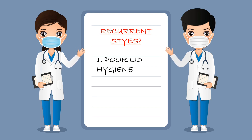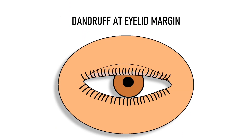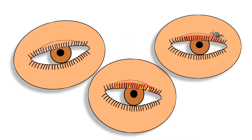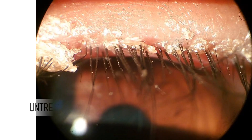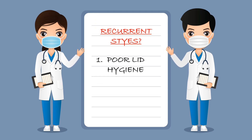The first reason is poor lid hygiene. Some people have chronic infection of the eyelid margin, some have dandruff at their eyelid margins, and some may even have lice on their eyelid margins. All these conditions fall under the category of blepharitis — infection or inflammation of the eyelids. If you have blepharitis, you are very likely to get recurrent styes, so unless you treat your blepharitis, getting rid of styes becomes extremely difficult.